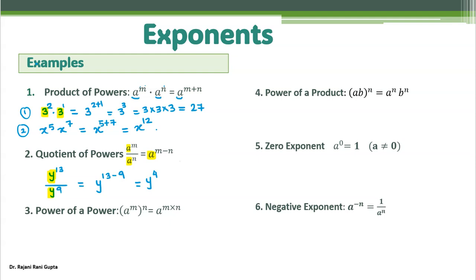For the third rule — power of a power — let's take the example x power 2, and again the power is 5. You have two powers of the same number. In this case, you multiply the two powers: 2 times 5. So it gives x to the power 10.